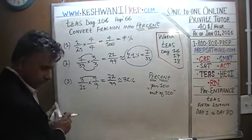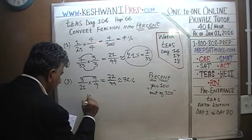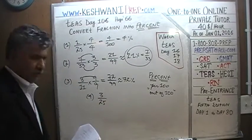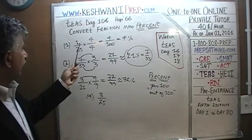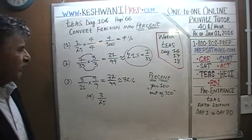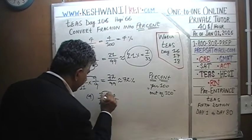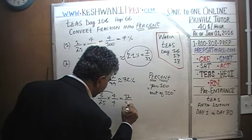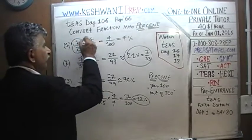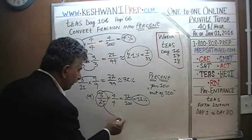Number four: three twenty-fifths. That's very simple — same idea as one twenty-fifth. One twenty-fifth is four percent, so this is twelve percent. We're going to multiply top and bottom by four. Four times three is twelve, giving twelve over one hundred, which is twelve percent. This makes perfect sense: if one twenty-fifth is four percent, then three twenty-fifths must be three times as much.